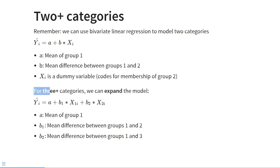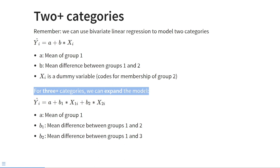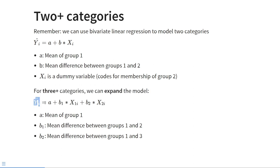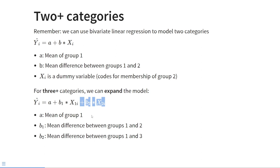If we have categorical variables with three or more categories, we simply expand the model. The formula becomes ŷ_i = a + b₁·x₁ᵢ + b₂·x₂ᵢ — we add an additional slope and an additional dummy variable. We now have three parameters: the intercept a, the first slope b₁, and the second slope b₂. And three variables: the outcome y_i, the first dummy x₁ᵢ, and the second dummy x₂ᵢ.